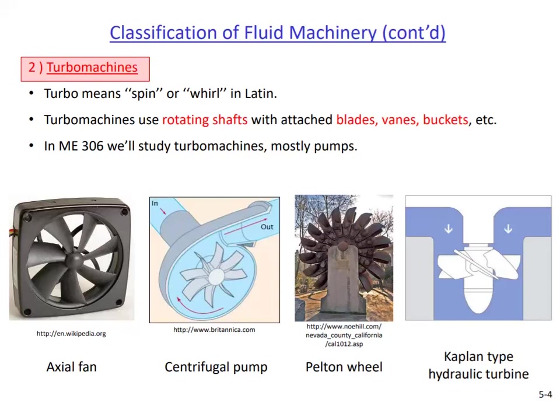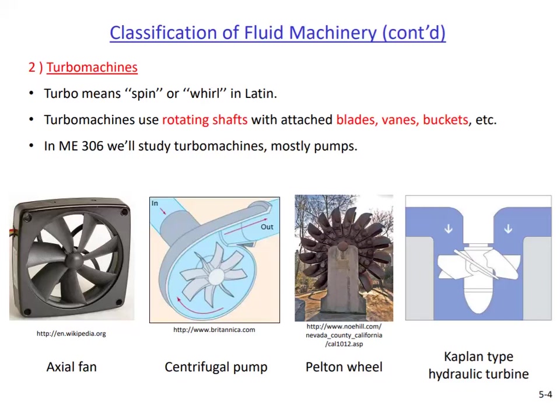For all turbo machines, the common components are the rotating shaft and the parts called blades, vanes, or buckets attached to it. These parts rotate with the shaft and get in contact with the fluid — they either do work on the fluid to pressurize it or give it a certain speed, or the fluid does work on them so the shaft can rotate to do useful tasks such as providing thrust to an airplane or generating electricity.